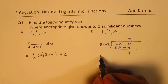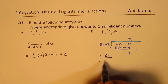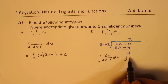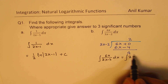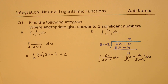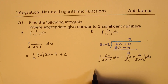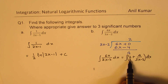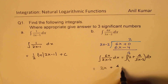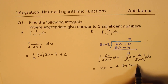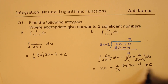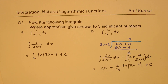So the integral of 6x over (3x minus 2) dx can now be written as the integral of 2 plus 4 over (3x minus 2) dx. Applying the formula: the integral of the constant 2 is 2x, and for the fraction it is plus 4 times ln of the absolute value of (3x minus 2), divided by 3, plus constant c.